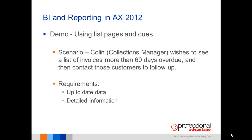We're going to look at a demonstration of using list pages and queues. The scenario is Colin, who is a collection manager, and he wishes to see a list of invoices that are more than 60 days overdue and then contact those customers to follow up. His requirements: he needs up-to-date data — there's no point getting a list of overdue invoices if half of them have already been paid — and he needs detailed information about what's outstanding, what's been paid, who the customer is, etc.